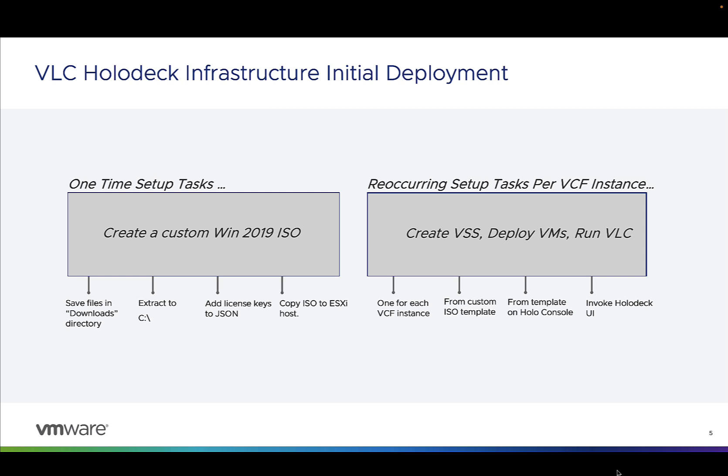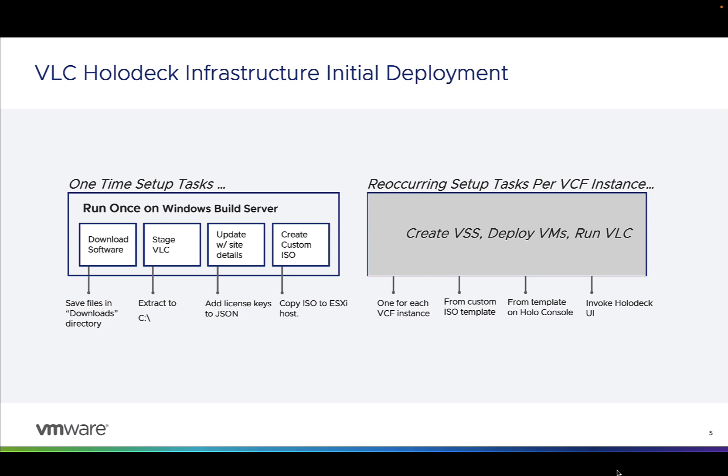The way we build this is you're going to need a Windows 2019 instance where you'll download and stage the software into the downloads directory. You'll download the Holodeck software, which includes the VLC components. You'll edit some of the JSON files for your specific environment — most significantly the configuration file where you'll add your own license keys. Then once you've staged those software components and updated your JSON files and license keys, you run a PowerShell script and it will go out and create this custom ISO.